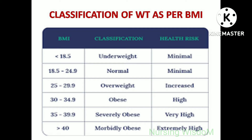Classification of weight as per BMI: BMI less than 18.5 is considered underweight, with minimal health risk. BMI from 18.5 to 24.9 is classified as normal, with minimal health risk. BMI from 25 to 29.9 is classified as overweight, with increased health risk. BMI from 30 to 34.9 is classified as obese, with high health risk. BMI from 35 to 39.9 is classified as severely obese, with very high health risk. BMI more than 40 is classified as morbidly obese, with extremely high health risk.